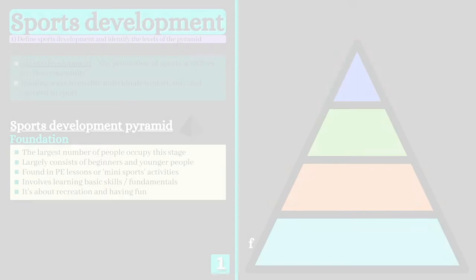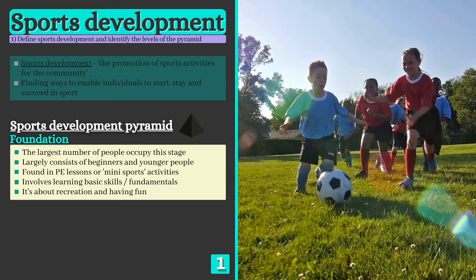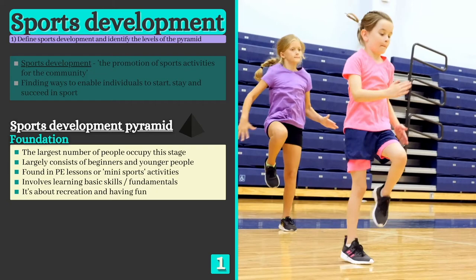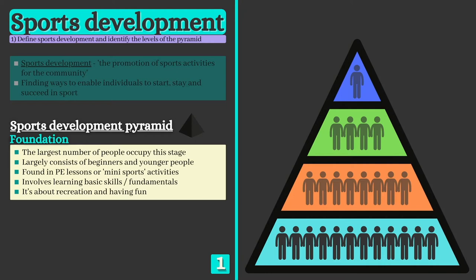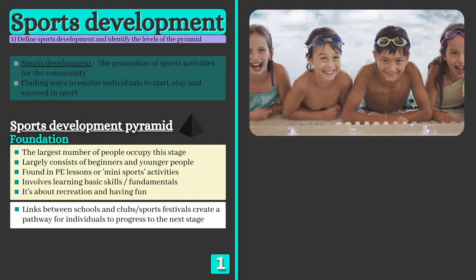The foundation stage is the first stage at which people come into contact with a sport, which often happens at a young age and during school PE lessons. It's about recreation and having fun, but also involves learning the basic skills or fundamentals of an activity. More people occupy the foundation stage than any other level, indicated by the wide base of the pyramid. Having a strong base or foundation is vital, as the more people who take part and have positive experiences, the greater the number that will progress through the pyramid and eventually become top class performers.